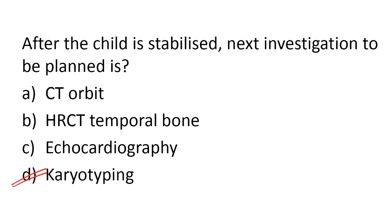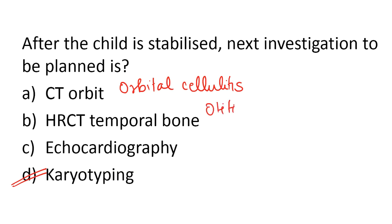Remember, brain abscess is usually secondary to a focus of infection elsewhere. The infection comes from elsewhere, and to find out the source of infection you do these investigations. For example, in case of orbital cellulitis you do CT orbit; in case of otitis media or mastoiditis you do HRCT of the temporal bone; and in case of congenital heart diseases you do echocardiography.